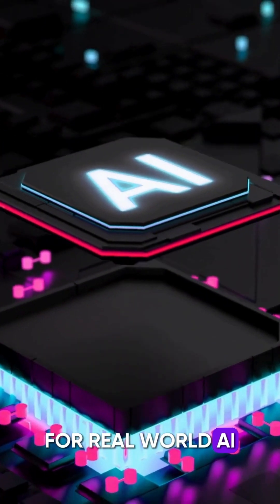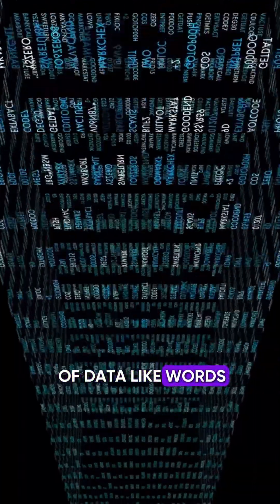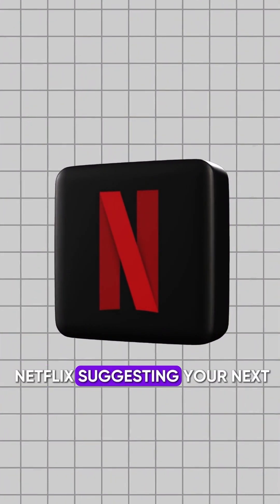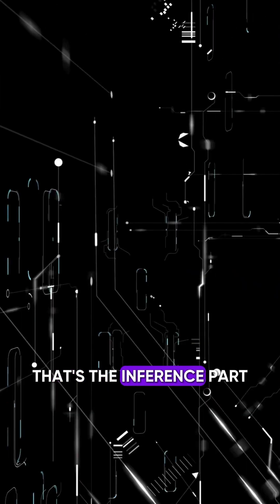For a real world AI, just look around you. Take autocomplete when you're texting your friends. It uses a ton of data like words, phrases and sentences as training data. Or it could be Netflix suggesting your next binge watch based on all the other shows you've watched. That's the inference part.